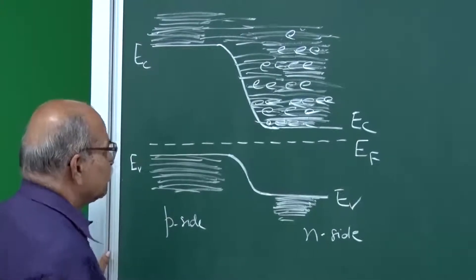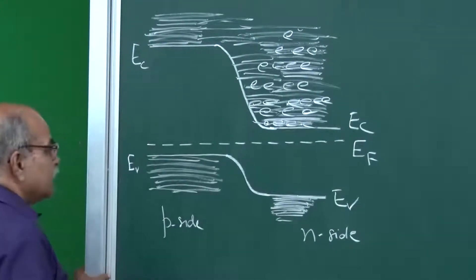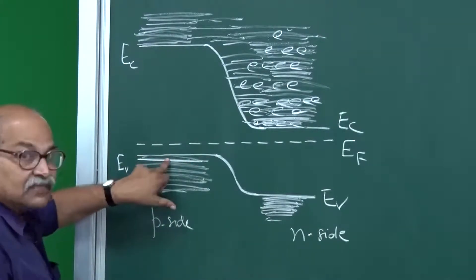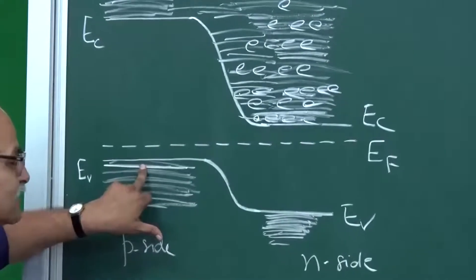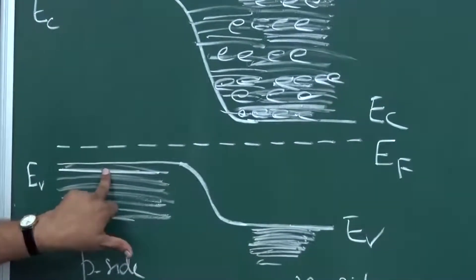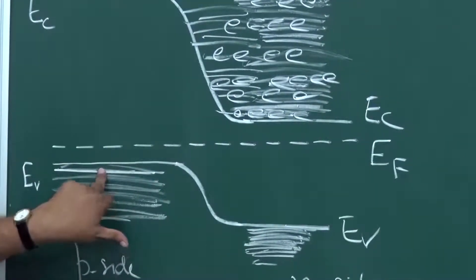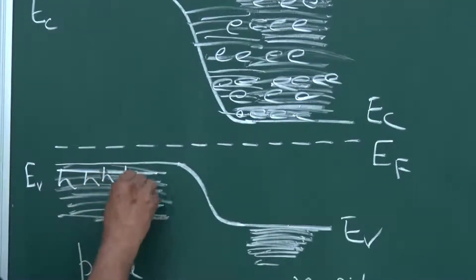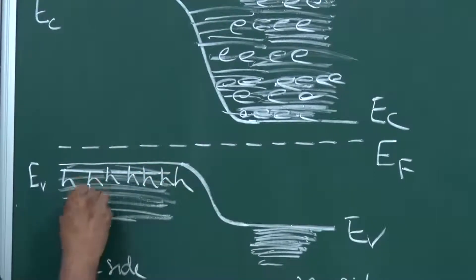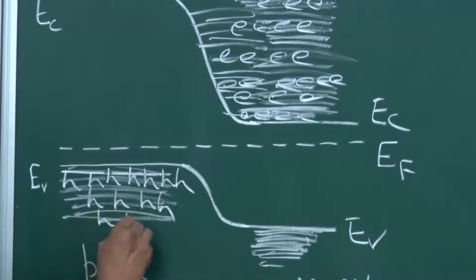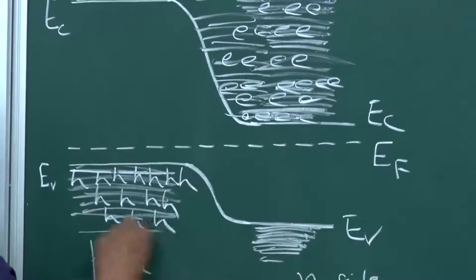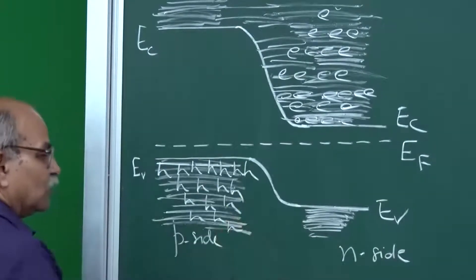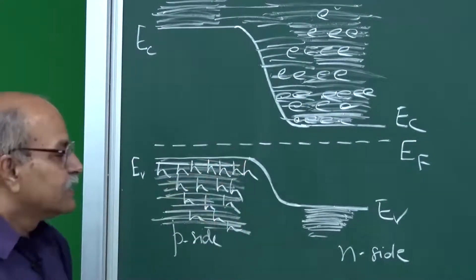A similar story holds for the p side, where you have holes. You look for the probability of not occupying a particular quantum state - that is 1 minus f(E) - which gives you the probability of a hole being there in the valence band. You have a large number of holes here, and as you go down in energy, this exponentially decreases and these quantum states will have fewer and fewer holes. All these things we discussed.